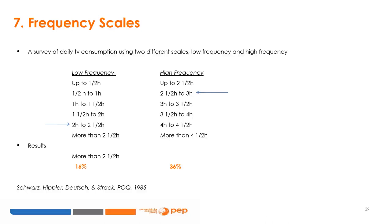A similar consideration applies to frequency scales. In a survey about daily TV consumption, the low-frequency scale had smaller jumps than the high-frequency scale. More than 2.5 hours was reported by 16% of respondents on the first scale, while 36% reported more than 2.5 hours on the second scale. So the span of scales matters.